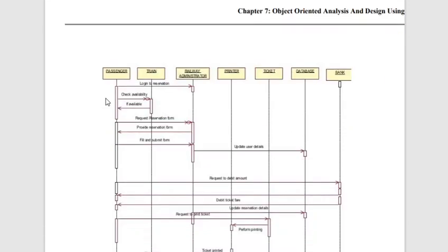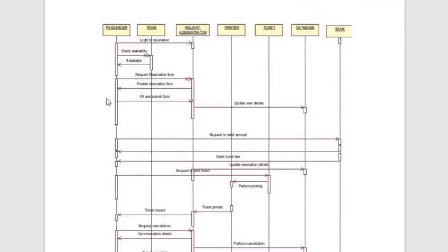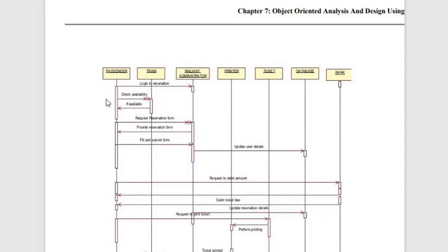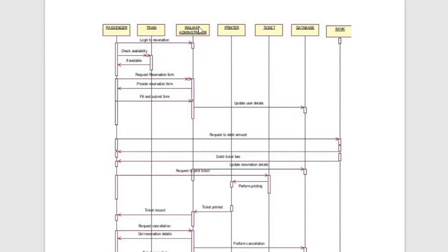Let us now take an example to understand how a sequence diagram is built. This is a simple sequence diagram from a web reference representing a scenario of railway reservation, where a passenger is capable of reserving a ticket using the railway reservation system. The objects participating are: passenger, train, railway administrator, printer, ticket, database, and bank. These objects will be performing defined roles whenever the scenario is realized. In some representations you may find a name with a colon, indicating the object notation.